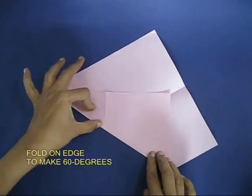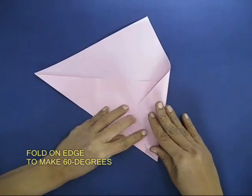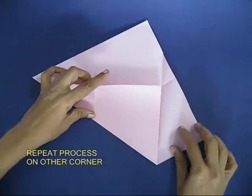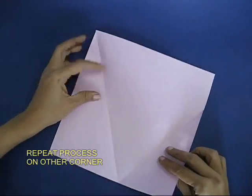Now fold through one corner and place the other corner on the midline. This way you will be folding 60 degree angles.